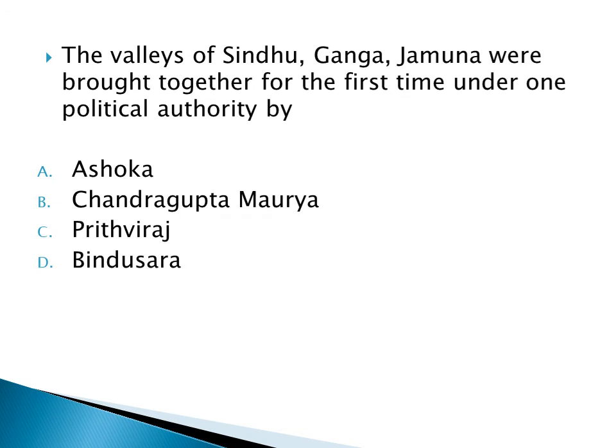The valleys of Sindhu, Ganga, and Yamuna were brought together for the first time under one political authority by whom? Option A: Ashoka, Option B: Chandragupta Maurya, Option C: Prithviraj, Option D: Bindusara. The right answer is Option B: Chandragupta Maurya.